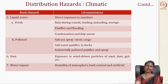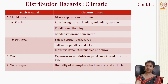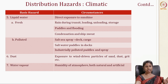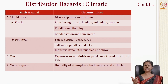Water is another climatic hazard, either fresh water or polluted water. Fresh water exposure includes rain during transit, direct exposure, puddles, flooding, condensation, and ship sweat. Polluted water is even worse — salty sprays from ships, salt water puddles on the dock, and industrially polluted puddles and sprays can all enter into packaging material.